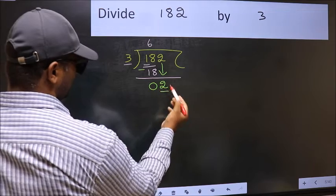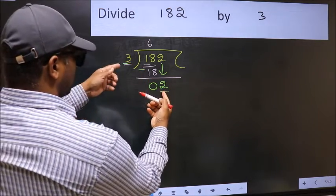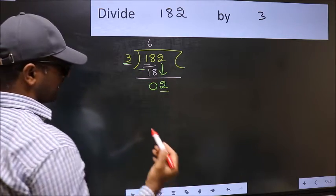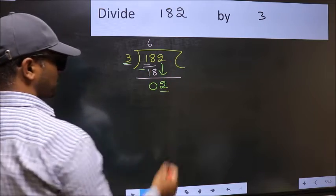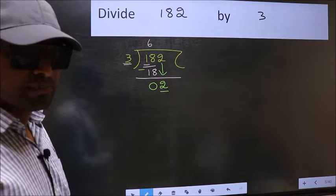Here we have 2 and here 3. 2 is smaller than 3. So, what many do is they directly put a dot and take 0, which is wrong. Why is it wrong? Because just now you brought this number down.